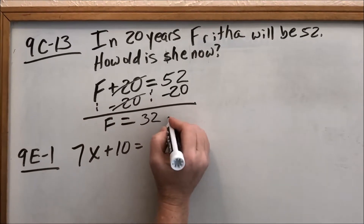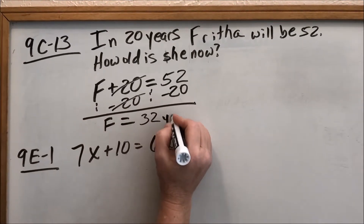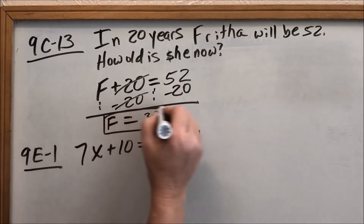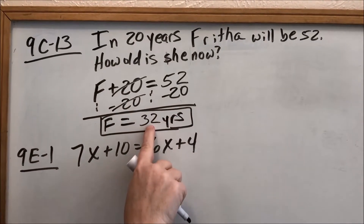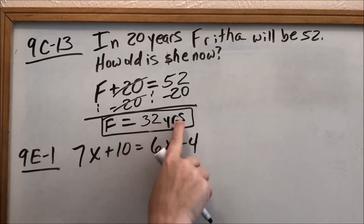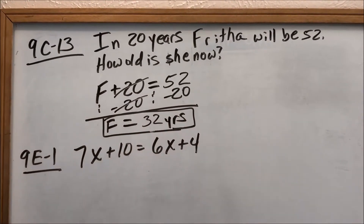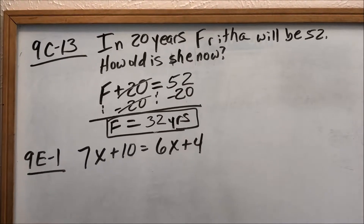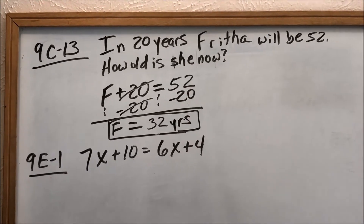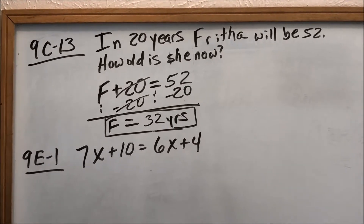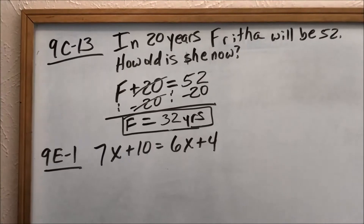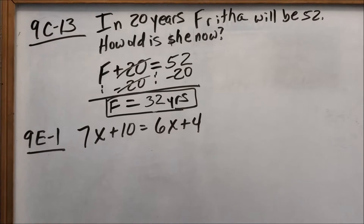So she is 32 years. When it's a word problem, it's really important to state what that number represents. That represents years — that's how old she is. It doesn't mean 32 months or 32 days; it means 32 years.